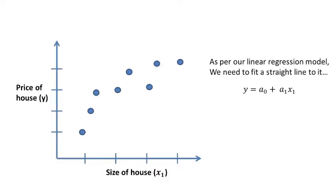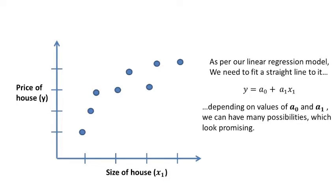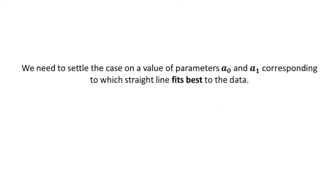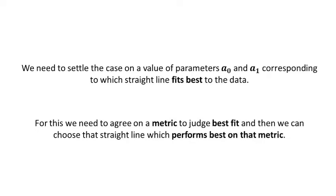As per our linear regression model, we need to fit a straight line to it with equation y equals a naught plus a1x1. And depending on values of a naught and a1, we can have many possibilities which look promising. We need to settle the case on a value of parameters a naught and a1 corresponding to which straight line fits best to the data. For this we need to agree on a metric to judge best fit, and we can choose that straight line which performs best on that metric.